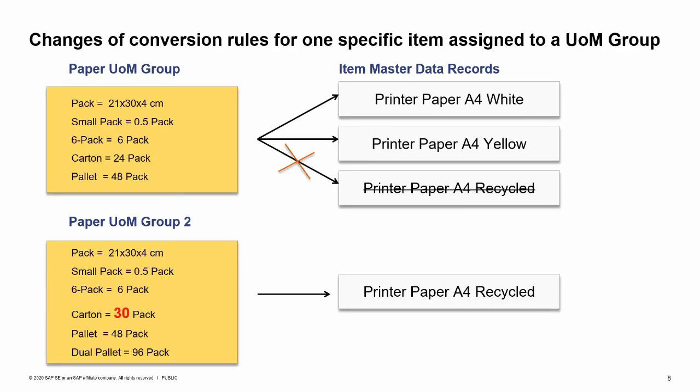Challenge: change the conversion rate within one UOM group for one particular item. You have to create a second UOM group — Group 2 — which includes an identical set of UOMs to the first group. The new group can also contain additional conversion rates. Assign the affected item to the new UOM Group 2. Note that you are not able to change the conversion rates within UOM Group 2 as long as there are open documents linked to the affected item. You have to close all linked open documents containing the affected item. After all documents are closed, you are able to navigate to the UOM group definition of UOM Group 2 and change the conversion rate accordingly.